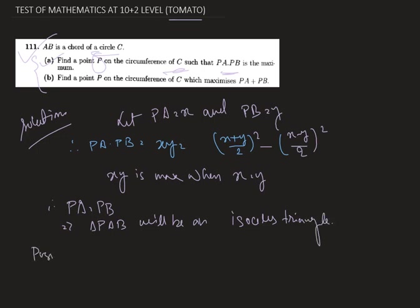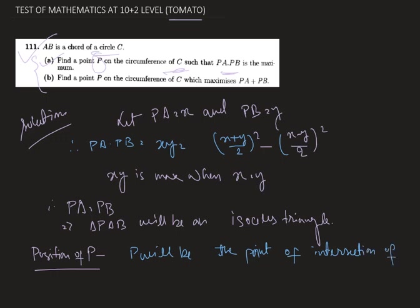Therefore the position of P is: P will be the point of intersection of the perpendicular bisector of AB and the circle C.